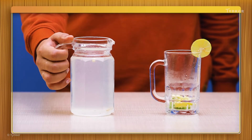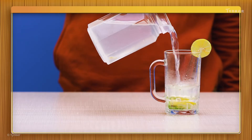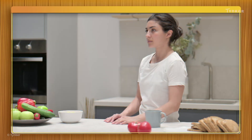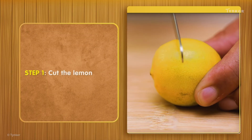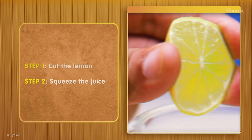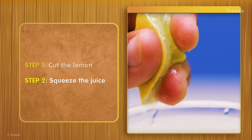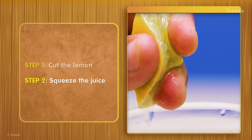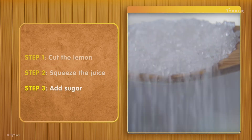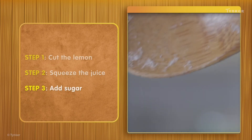Think about a tall glass of lemonade on a warm summer day. Now recall the steps to make one. First, you take the lemon and cut it open with a knife. Then, you squeeze the juice out of the lemon into a glass. After that, you stir sugar into the juice to dissolve it.